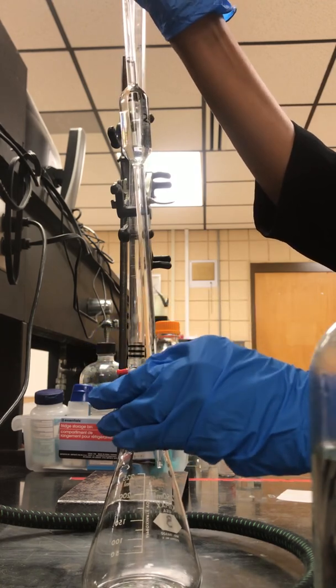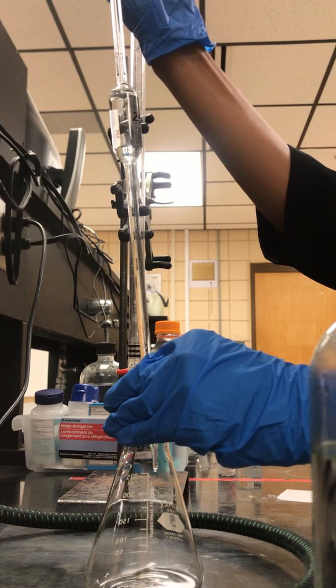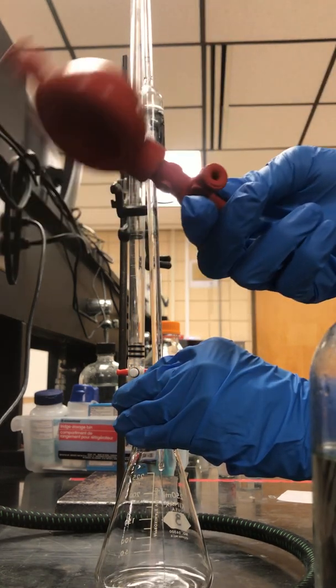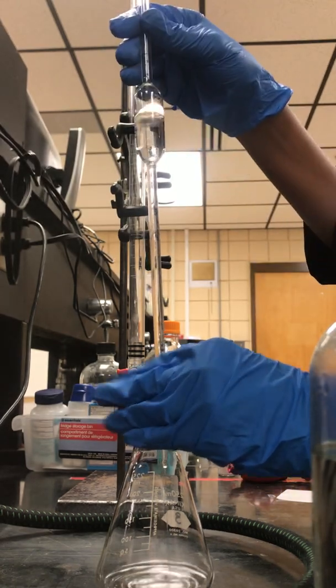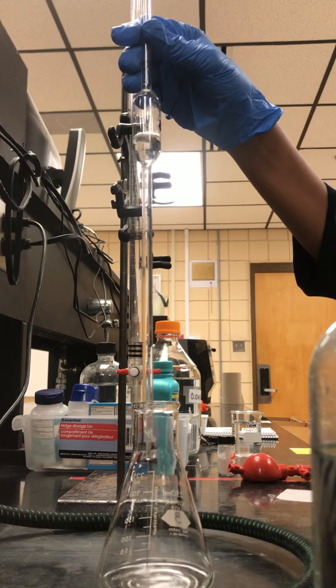You can either press the E to get it to come out or you can remove the bulb from the pipette and it'll just go out via gravity.